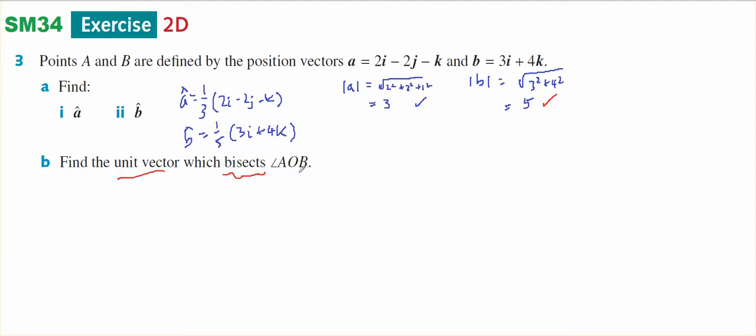How do I bisect an angle is the big question. So I've got vector A, and I've got vector B, and this point here is point A, and this point here is point B, because these are position vectors, so this is going to be the origin. So the angle theta is point B, and I wish to find half of it.